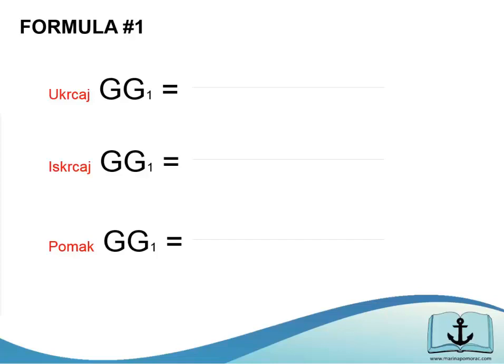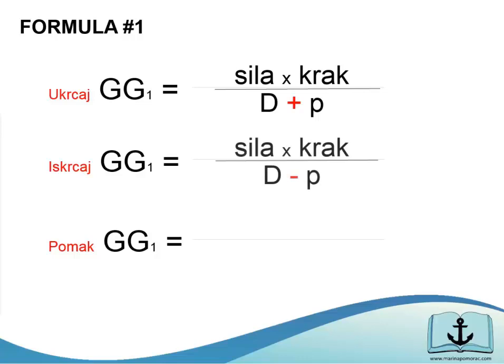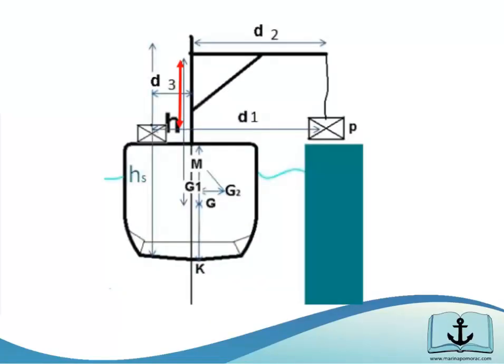Formula za pomak centra gravitacije u bilo kojem smjeru glasi: sila puta krak kroz deplasman plus sila ako ukrcavamo. Ako iskrcavamo: sila puta krak kroz deplasman minus sila - deplasman se u slučaju iskrcaja mora smanjiti. A ukoliko pomičemo: sila puta krak kroz identičan nepromijenjeni deplasman. Ovisno o smjeru pomaka uvrštavamo odgovarajući krak. Kako ovdje govorimo o jednoj formuli koja se samo vrti i prilagođava dimenziji x, y ili z koji nastojimo riješiti, potrebno je prije rješavanja nacrtati sliku i posložiti što je što od zadanih podataka, kako nam se ne bi izmiješali brojevi.